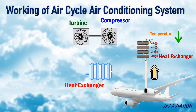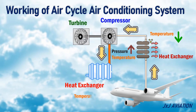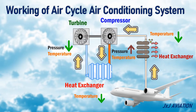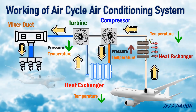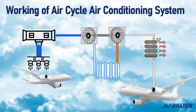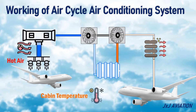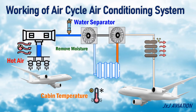The air then flows through a compressor where the pressure and temperature increase. The air is then sent through another heat exchanger where the temperature is reduced. This air flows across a turbine where the pressure and temperature decrease. This cold air is sent to a mixer duct and then distributed inside the aircraft. The air from the ACM may be mixed with hot air to adjust the cabin temperature. A water separator is also installed to remove moisture from the air due to condensation effects.